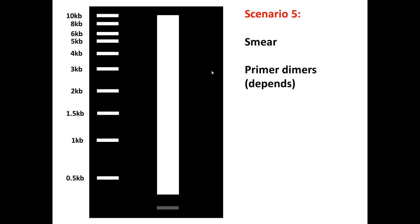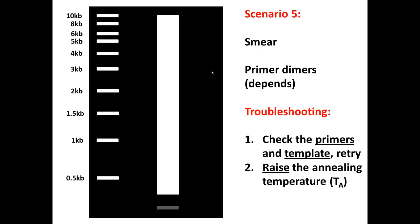Okay, scenario five, we have a smear. Now I personally have not seen this very often. I know people that have seen this fairly often, so I guess it really depends. In my opinion and my experience when I have seen it, this is some serious issues with your primers or templates that can cause severe non-specific amplification. So please check your primers and your template to make sure they're okay. This could also just be a case of you need to raise the annealing temperature to limit this really bad non-specific binding.